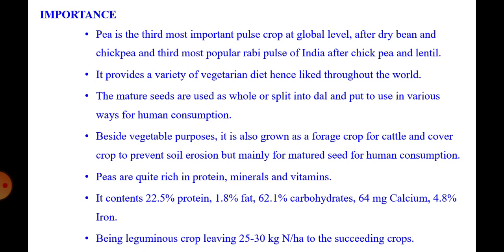Peas are quite rich in protein, minerals, and vitamins, causing a major protein diet for people in many parts of the world. It contains about 22.5 percent protein, 1.8 percent fat, 62.1 percent carbohydrate, 64 milligram calcium, and 4.8 percent iron.